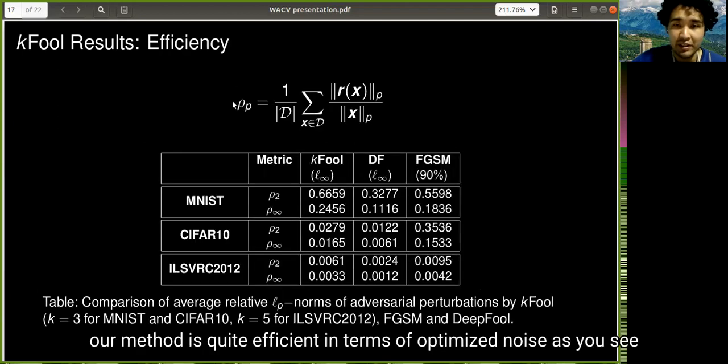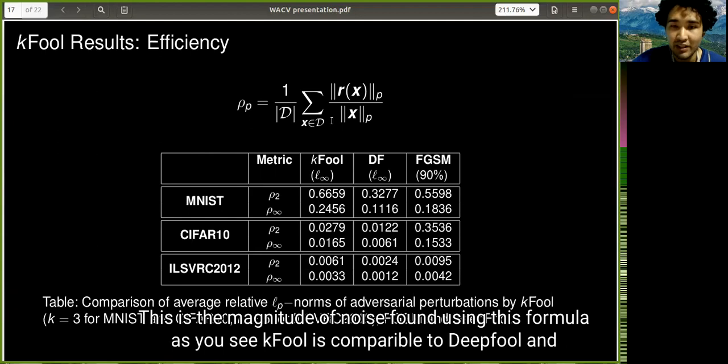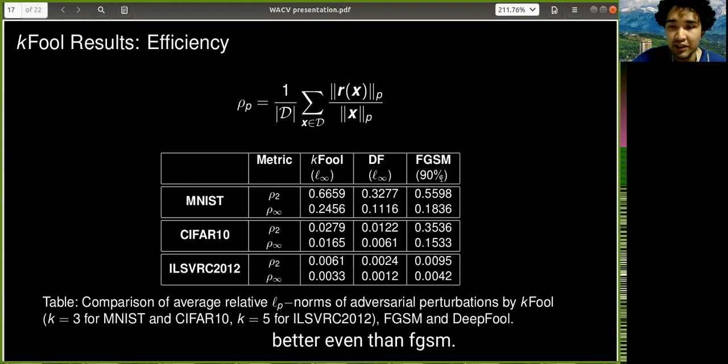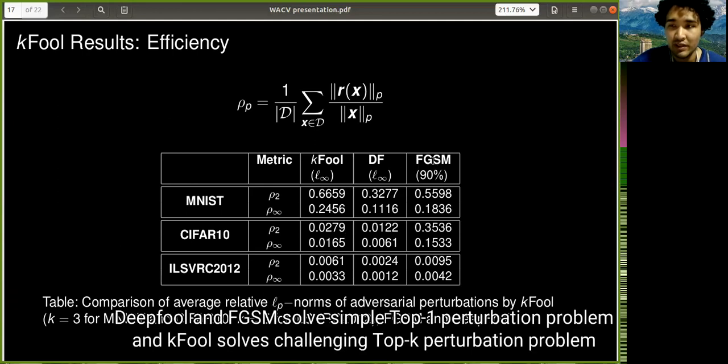And our method is quite efficient in terms of optimized noise. As you see, this is the magnitude of noise using this formula. K-Fool is comparable to DeepFool and even better than FGSM. However, DeepFool and FGSM solve a simple top-one perturbation problem, and K-Fool solves a challenging top-k perturbation problem.